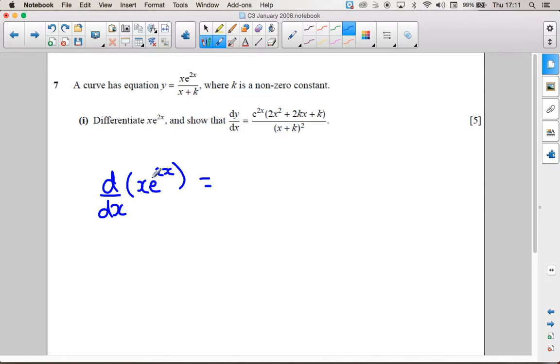We're going to use the product rule. So we need to differentiate the first one and leave the second one alone. So that's just e to the 2x. Plus, leave the first one alone and differentiate the second one. The differential of e to the 2x is 2e to the 2x. So that's what we get for this one.